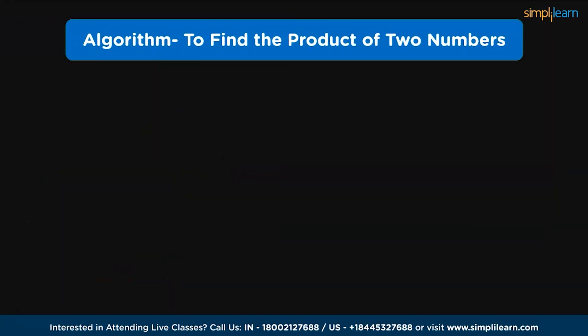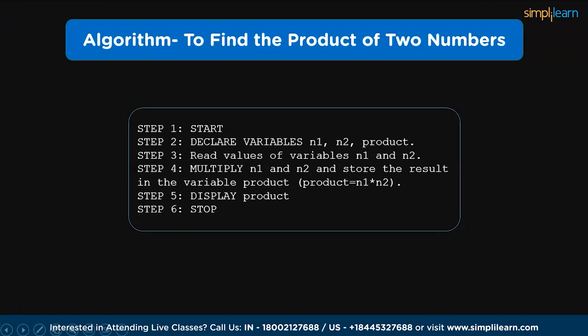Now, it's time to look at the algorithm to find the products of two numbers. Step 1, we have start and in step 2, declare variables n1, n2 and product. Here are the variables: n1, n2 and product.